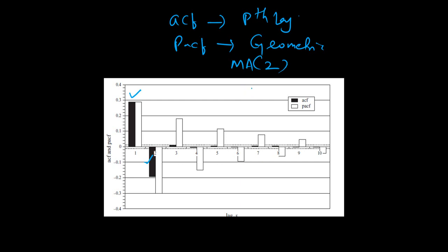In the previous graph it was an MA(1) series; this is an MA(2) series because ACF is significant for two lags. The black bar is quite significant at lag 1 and also at lag 2. An MA(2) process can be represented as: Yt = ψ₁·u(t−1) − ψ₂·u(t−2) + u(t), where the first term is positive (positive Y-axis) and the second term is negative. That's how you identify an MA process.